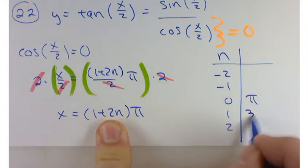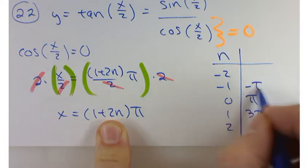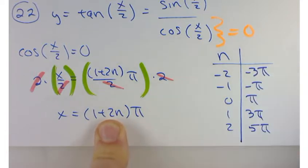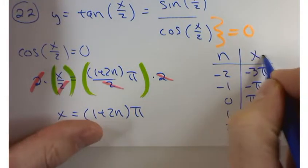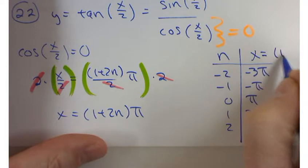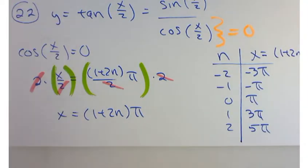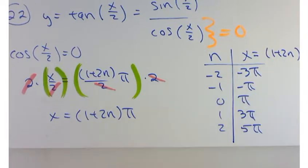At 1, I get 3π. Plugging in a 2 there, I get 5π, and so on. This is where you're going to get your asymptotes. So odd multiples of π.